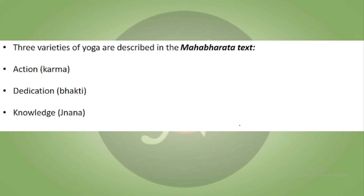Three varieties of yoga are described in the Mahabharata and the Bhagavad Gita text: Shri Krishna talks about Karma Yoga, then there is Bhakti Yoga, and then Gyan Yoga. Additionally, there is a book called 'Autobiography of a Yogi' — whose logo we placed at the start — which shows many practitioners of yoga who possessed strength and instincts beyond normal humans. It's a book worth reading someday.